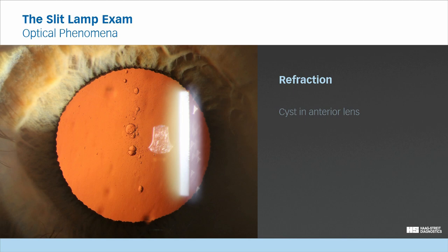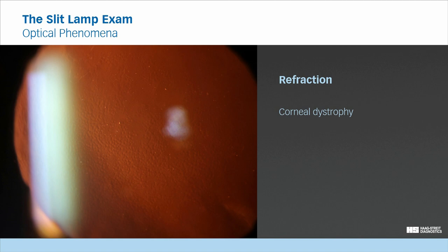During slit lamp examination, this phenomena can be observed for example in these cysts, which are in the anterior cortex of the lens, or in this case of corneal dystrophy.